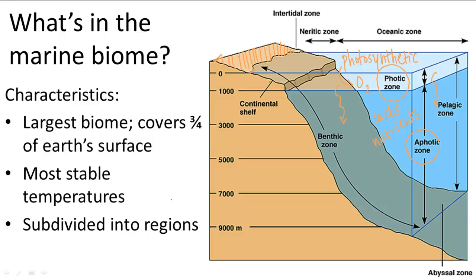Right under the intertidal zone is the neuritic zone, which starts at the low tide mark and goes down to the continental shelf — this is the ocean water we see at the beach. It inhabits things like seaweed, crustaceans, sea urchins, and different types of fish. There are overlaps in species between the intertidal and neuritic zones because they are so close together. Together, both zones form the littoral zone.